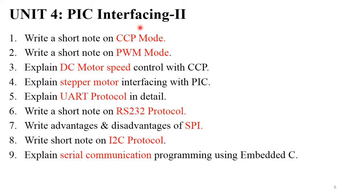Unit 4: A short note on CCP mode or PWM mode — explain those components with their diagram, generally for 4 to 6 marks. The next question is 'DC motor speed control or stepper motor interfacing' — any one of these two questions will be asked in your exam. You need to draw their diagrams and explain their features and components. These two questions are generally asked for 6 to 8 marks.